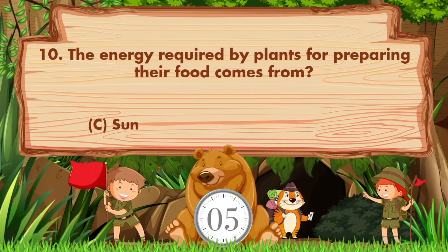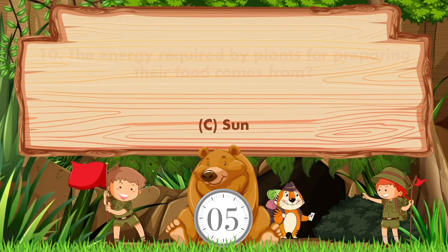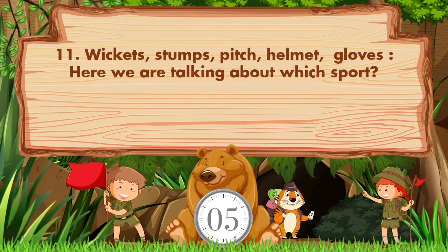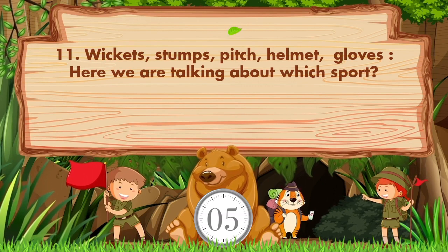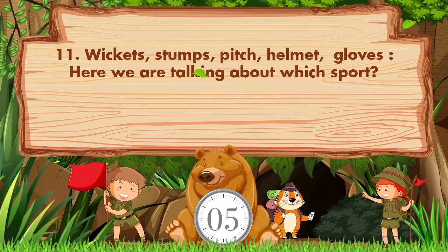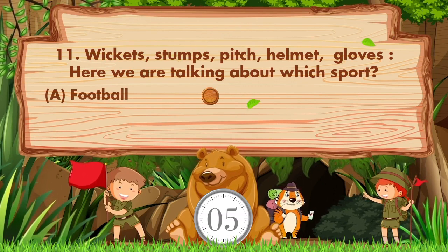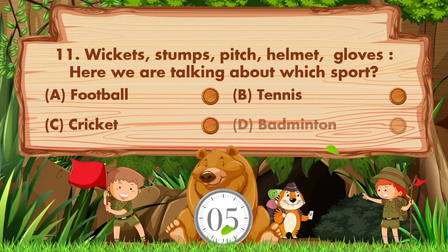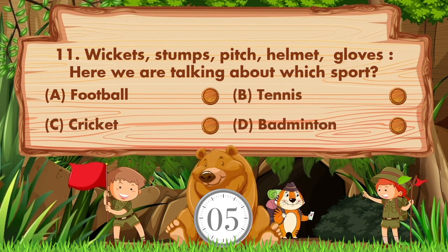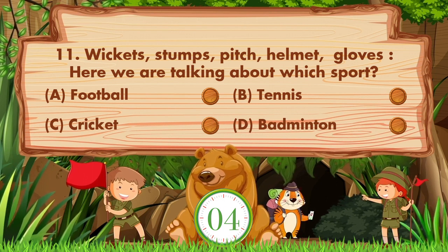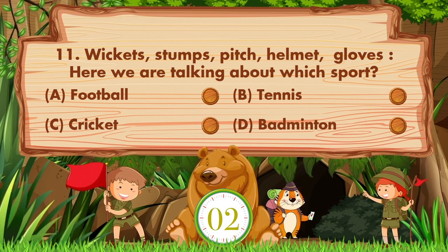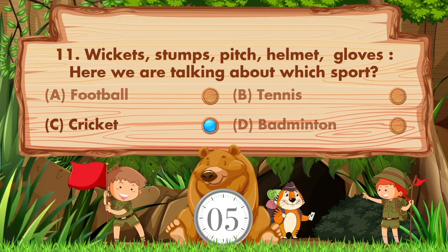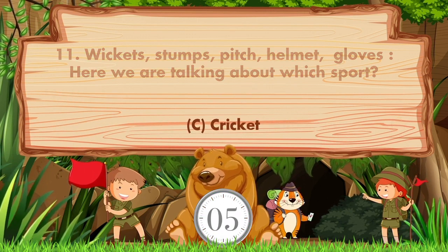Answer is option C, sun. Wickets, stumps, pitch, helmet, gloves — here we are talking about which sport? Option A: football, B: tennis, C: cricket, D: badminton. Answer is option C, cricket.